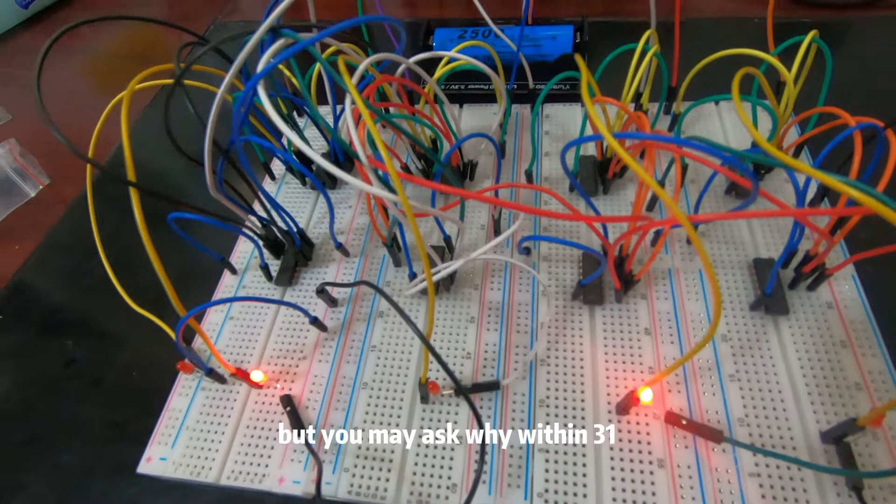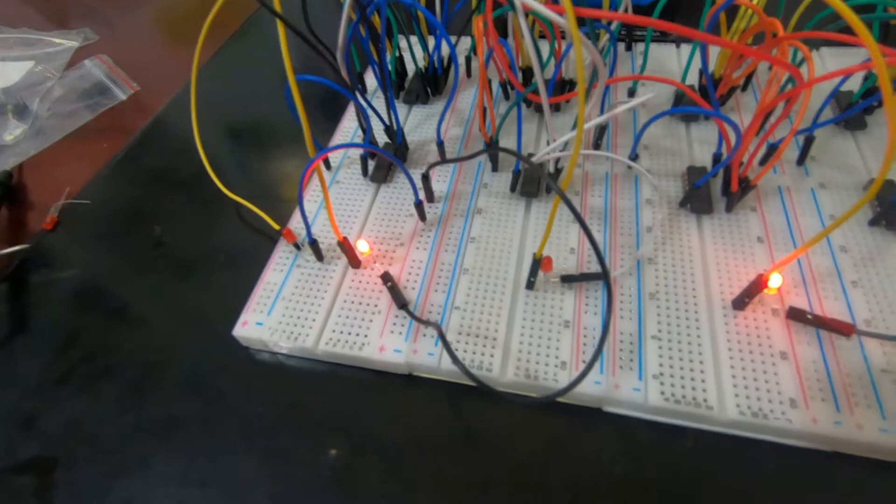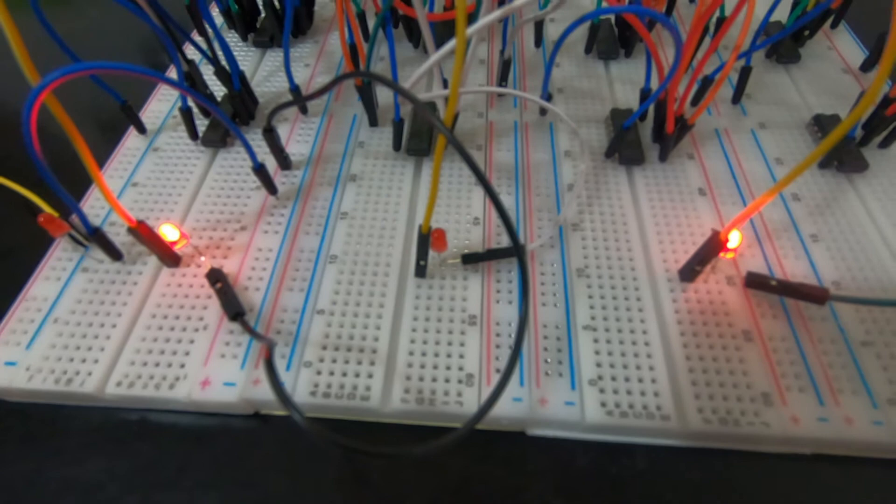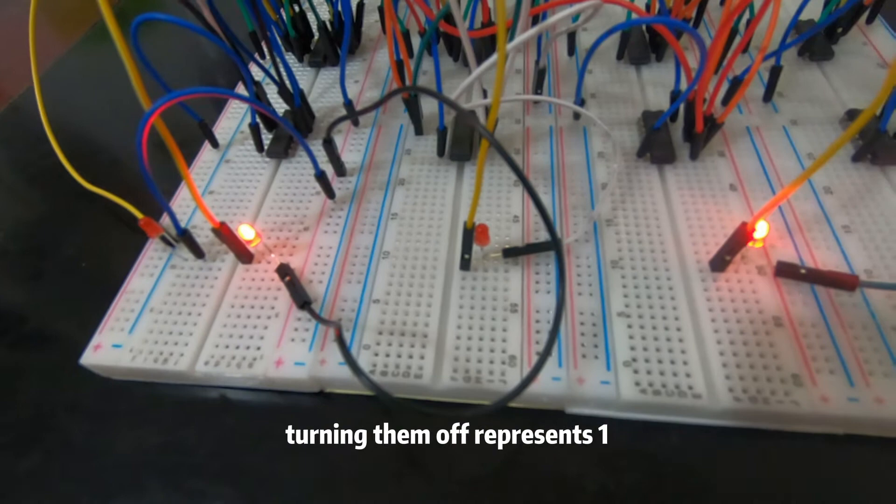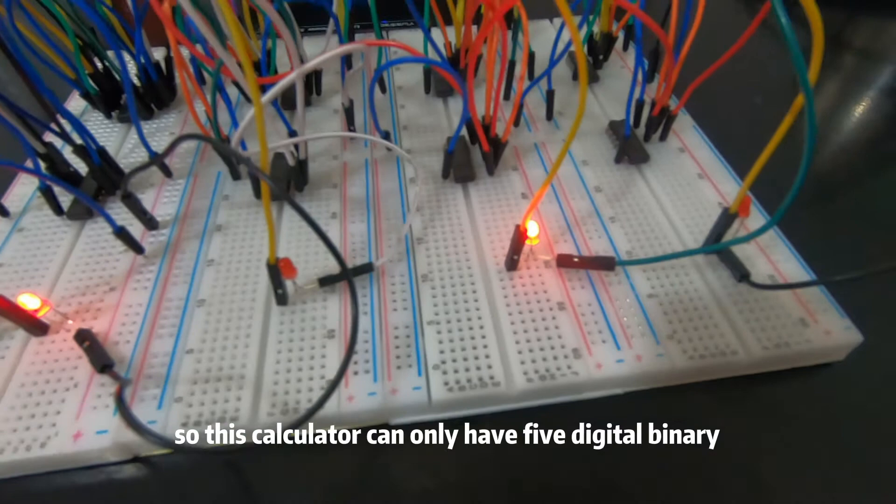It's limited to 31 because I have five outputs represented by five light bulbs. Turning them all on represents zero, and turning them off represents one. So this calculator can only have five-digit binary output.